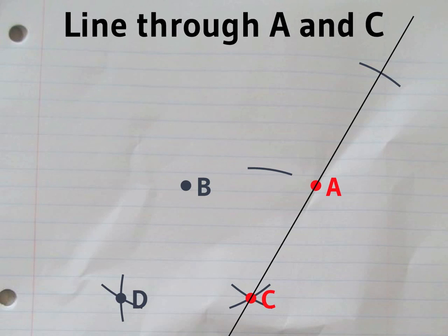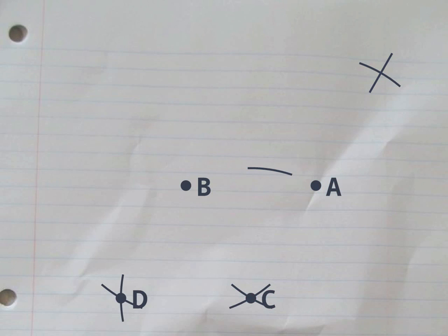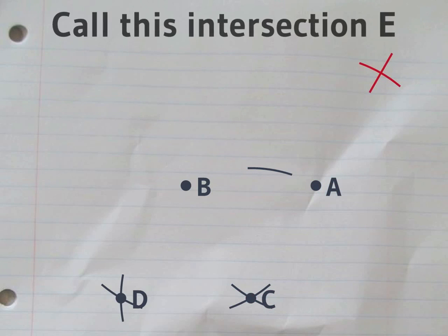Now draw a line through A and C. The place where that meets the first circle we'll call E.